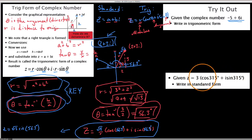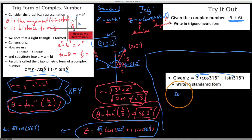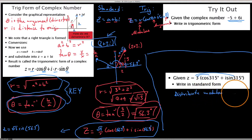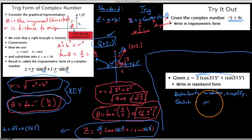This last part: I want to sketch a picture and talk about how to go from trig form back to standard form, which is actually much quicker. The reason why is because all we really have to do is distribute the modulus through. Step one: sketch a picture. Step two: distribute the modulus and simplify.